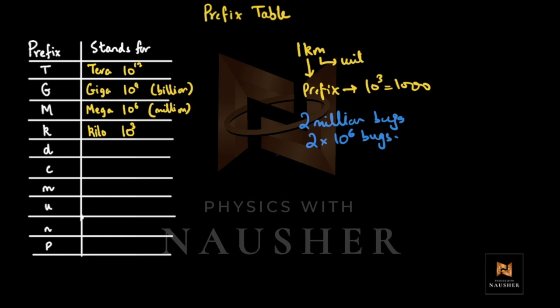This table is really helpful. When you say you download at a speed of 10 GB per second, you would write that as 10 × 10⁹ bits per second. The prefix value is what you look up and substitute in.